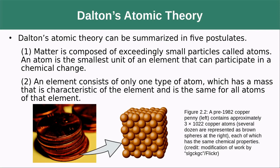It's the smallest unit of an element that has the properties of that element. The second is that an element consists of only one type of atom, which has a mass that is characteristic of the element and is the same for all atoms of that element.